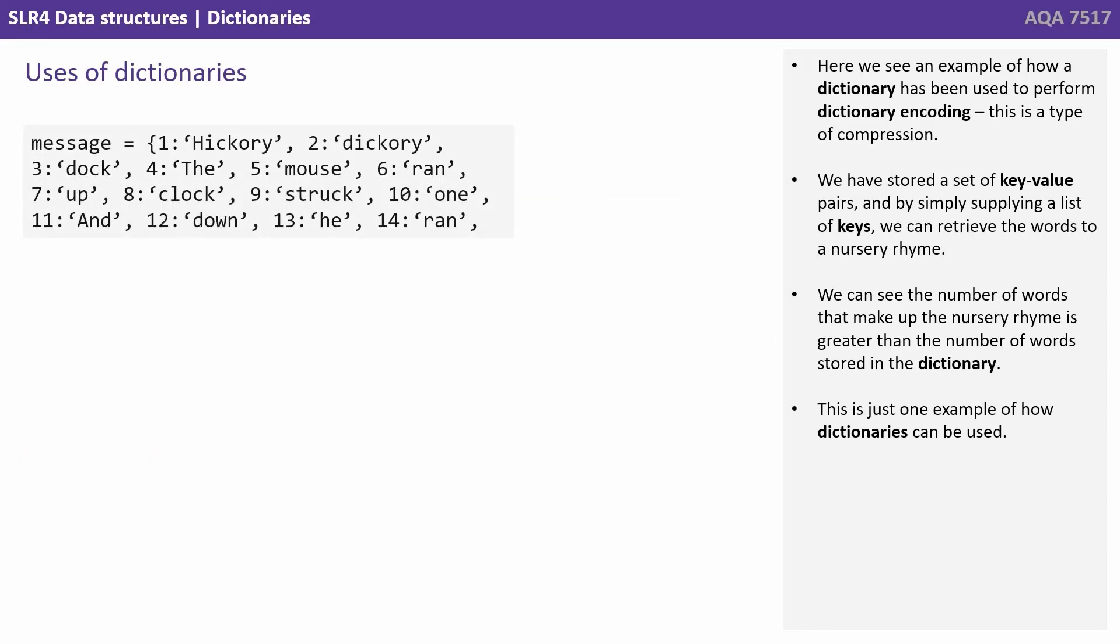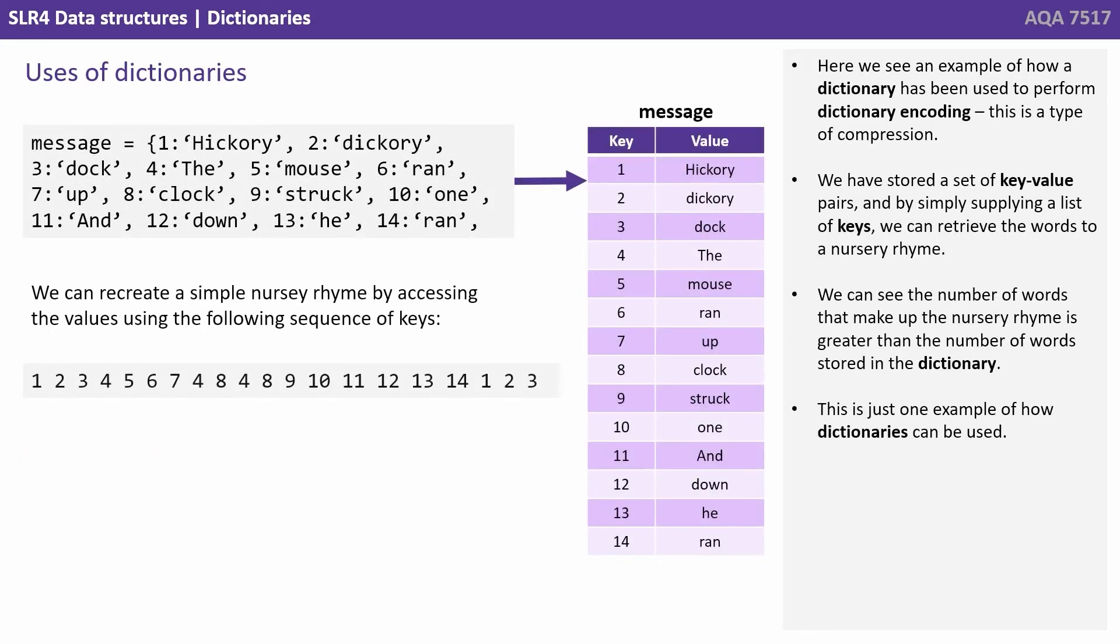Here we see an example of how a dictionary has been used to perform dictionary encoding, and this is a type of compression. We've stored a set of key-value pairs, and by simply supplying a list of keys we can retrieve the words to a nursery rhyme. We can see the number of words that make up the nursery rhyme is greater than the number of words stored in the dictionary. This is just one example of how dictionaries can be used.